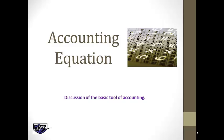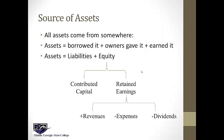Today we're going to talk about the accounting equation — this is the basic tool of accounting. All assets have to come from somewhere. Assets are things that firms buy that have future value and haven't been used up yet. Firms can get assets by borrowing cash, or owners can give cash to the firm, or they can earn it by selling something to a customer at a price higher than what it cost — that difference is profit.